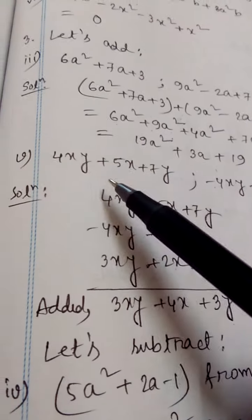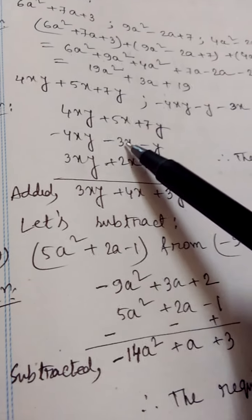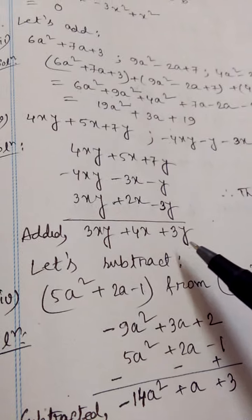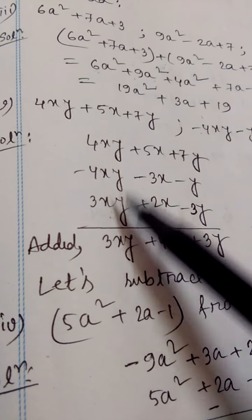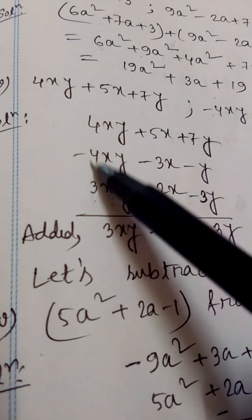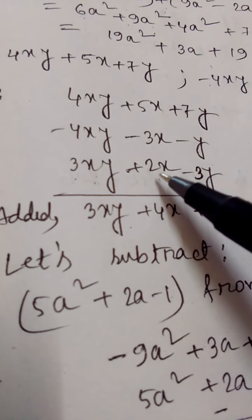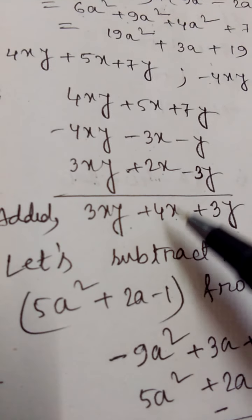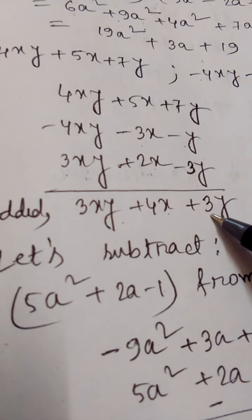Next, question 3: 4xy plus 5x plus 7y, minus 4xy minus y minus 3x, plus 3xy minus 3y plus 2x. We shall write all these expressions vertically downwards in the second method. Like terms are written vertically downwards. Then 4 minus 4 equals 0, 0 plus 3 equals 3, so this value equals 3xy. For the x terms: 5x minus 3x plus 2x, after simplification plus 5 minus 3 is 2, 2 plus 2 is 4, therefore plus 4x. For y: plus 7 minus 1 is 6, 6 minus 3 is plus 3, into y.